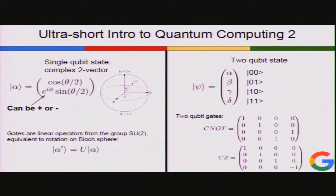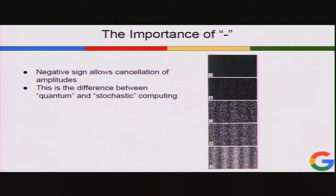For two-qubit gates, we have four basis states and any linear combination of those. The only two-qubit gates people are interested in for the most part are the CNOT and the CZ — it's just a matrix multiplication to apply a two-qubit gate. The thing that makes those amplitudes different from probabilities is that they can be negative, which means when you add them, elements of that sum can have different sign, cancel, and you can get nulls.